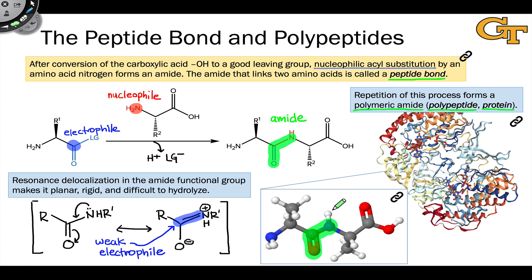This is the essence of how proteins are formed from monomeric amino acids. A nucleophilic acyl substitution reaction involving the carbonyl group and the amino nitrogen forms an amide, which is quite stable to a variety of conditions, and because of the structural diversity of the amino acid side chains, can give rise to a huge variety of functions.